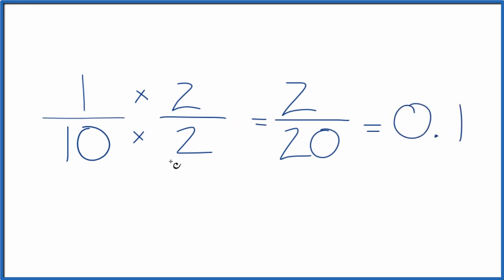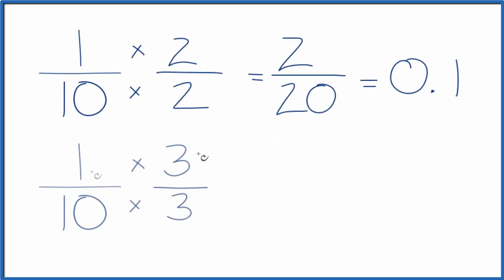Let's take 1 tenth and multiply it by 3 over 3. We're multiplying by 3 over 3, which is just 1. 3 divided by 3 is 1, not changing the value. 1 times 3 is 3. 10 times 3, that's 30.